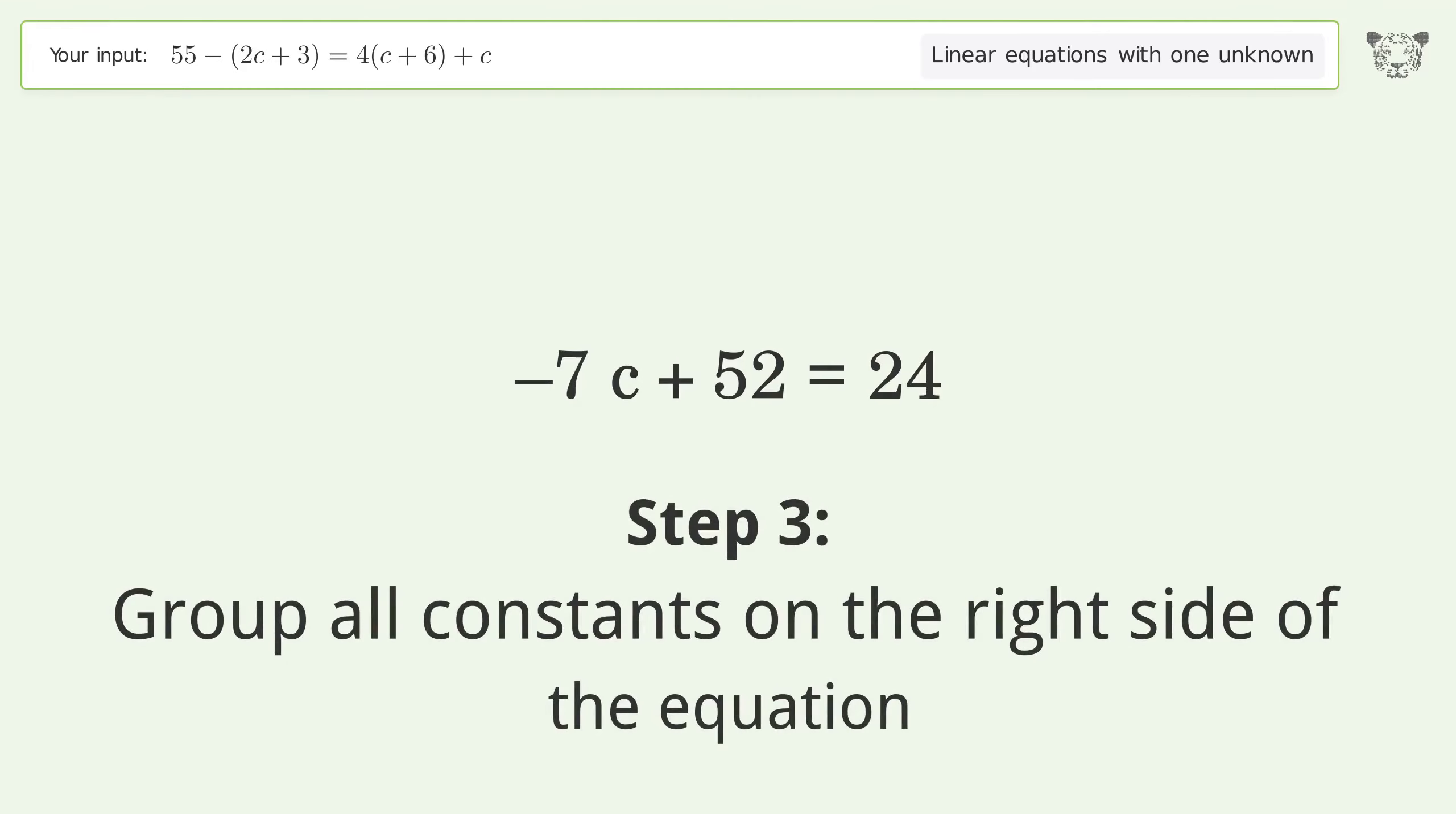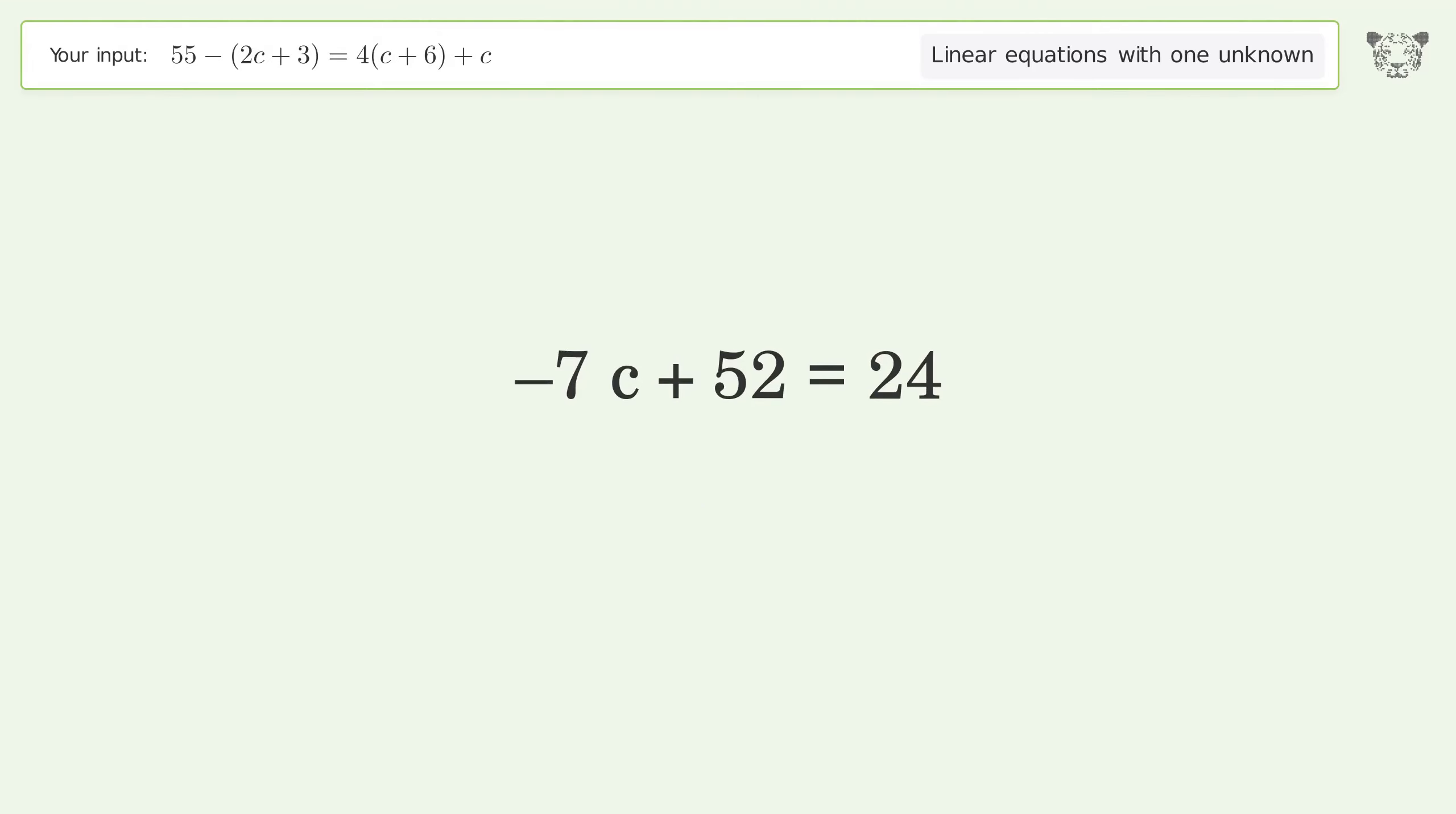Group all constants on the right side of the equation. Subtract 52 from both sides. Simplify the arithmetic.